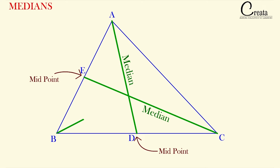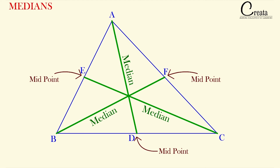These three medians start from the vertex and meet the midpoint of the opposite side. For this triangle, AD, BE, and CF are the three medians. The three medians of a triangle intersect at a common point — let's say the intersection point of the three medians is G. The point G is known as the centroid of the triangle; the point of intersection of the three medians is known as the centroid.